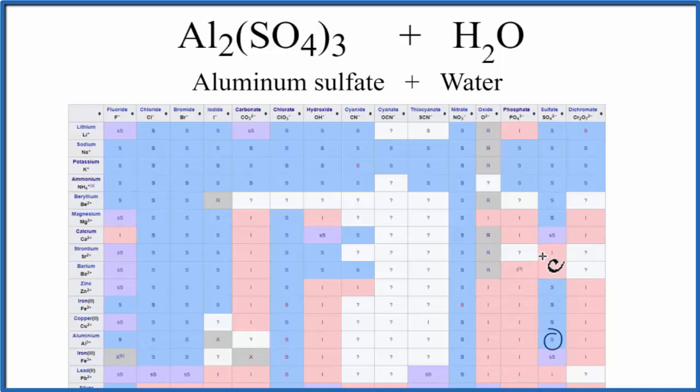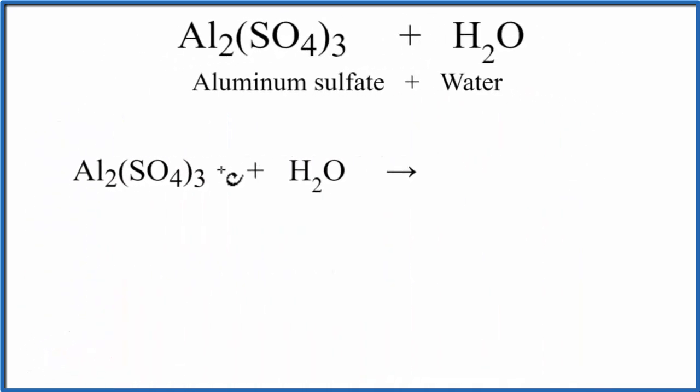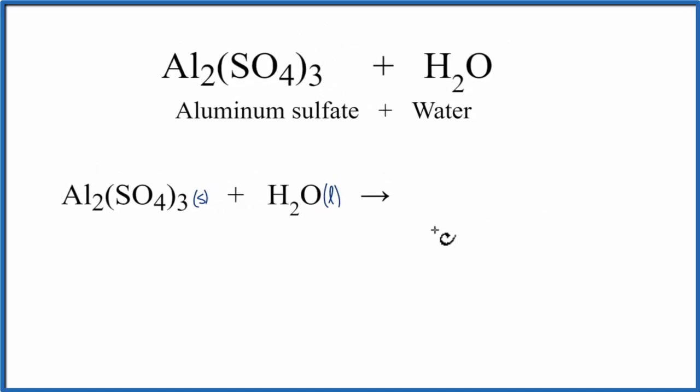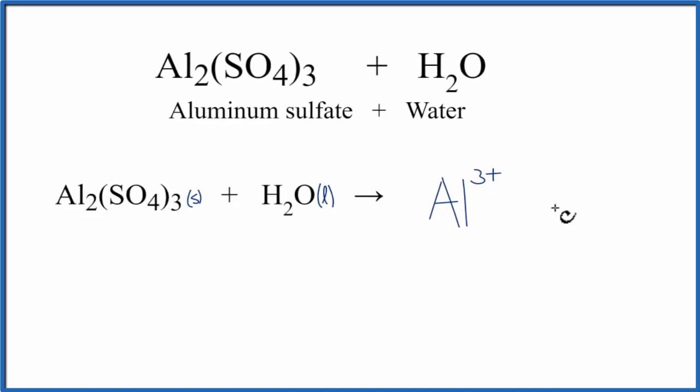So let's go back and write the equation. We put solid aluminum sulfate in liquid water, and it dissolves. It breaks apart into its ions. So we'll have that Al3+ and we'll have the sulfate ion.